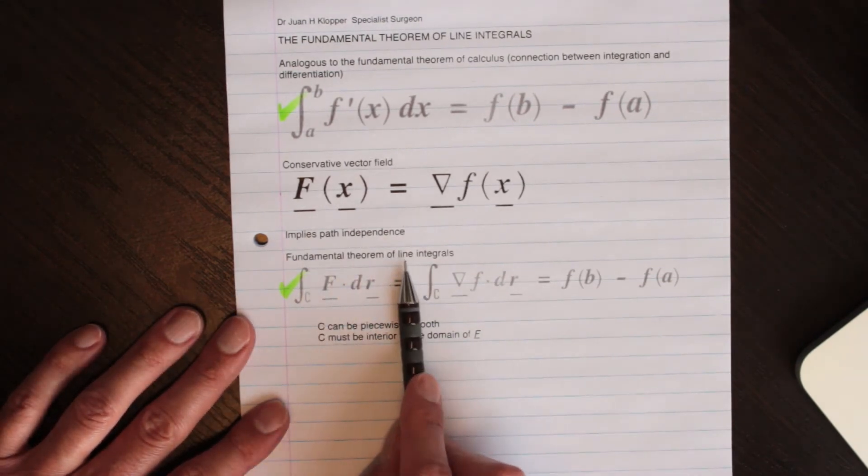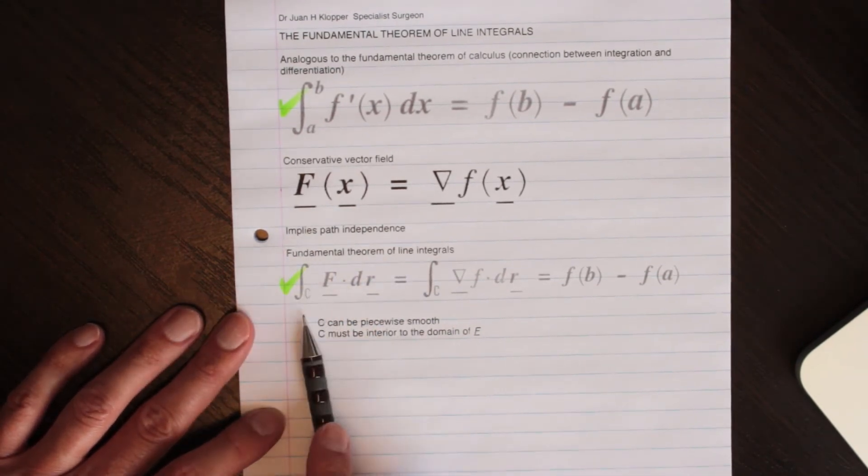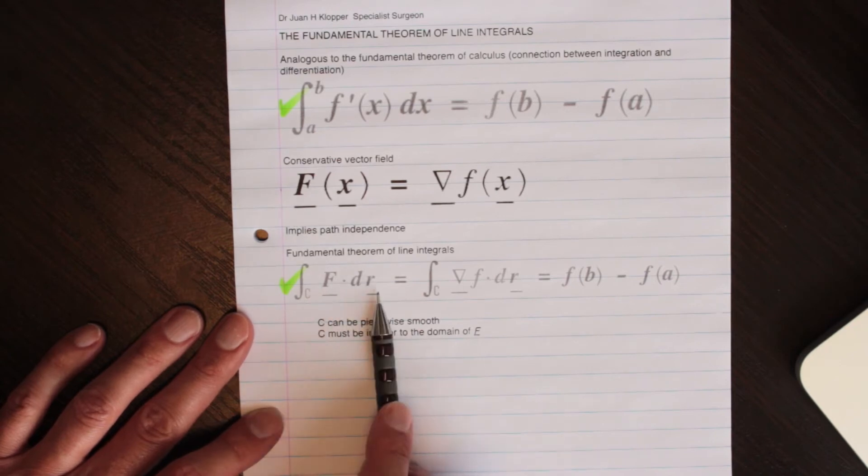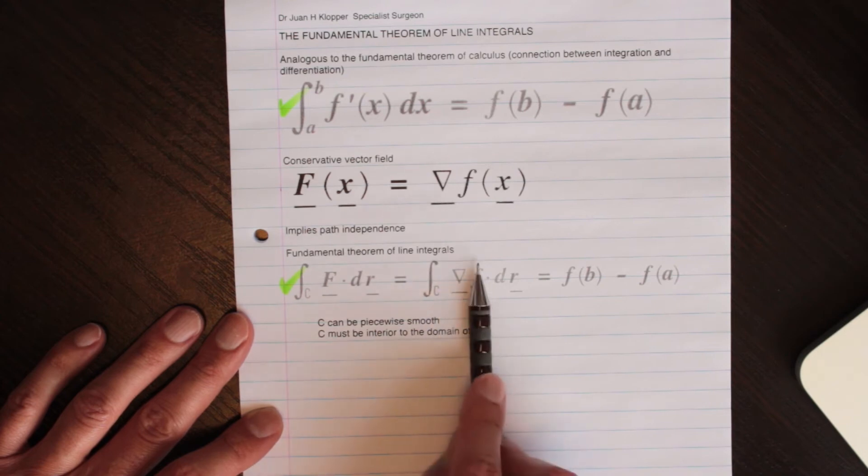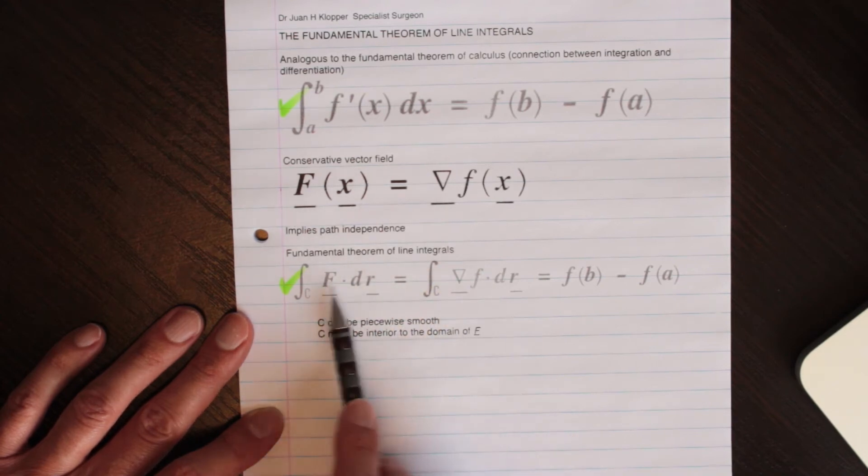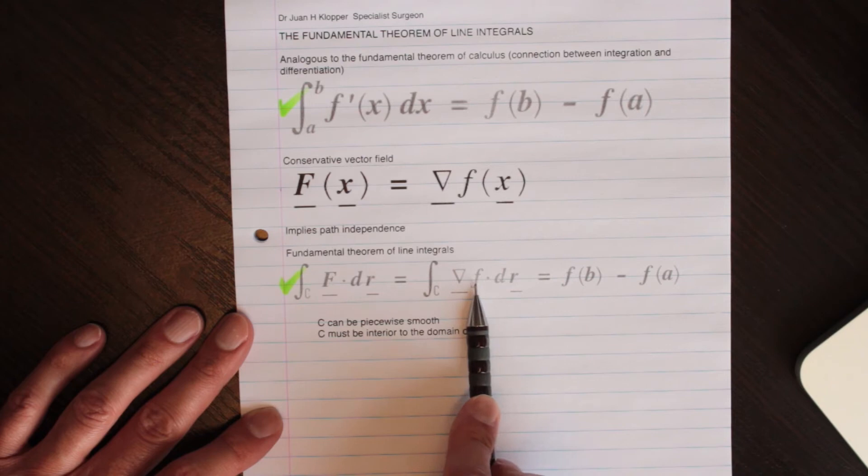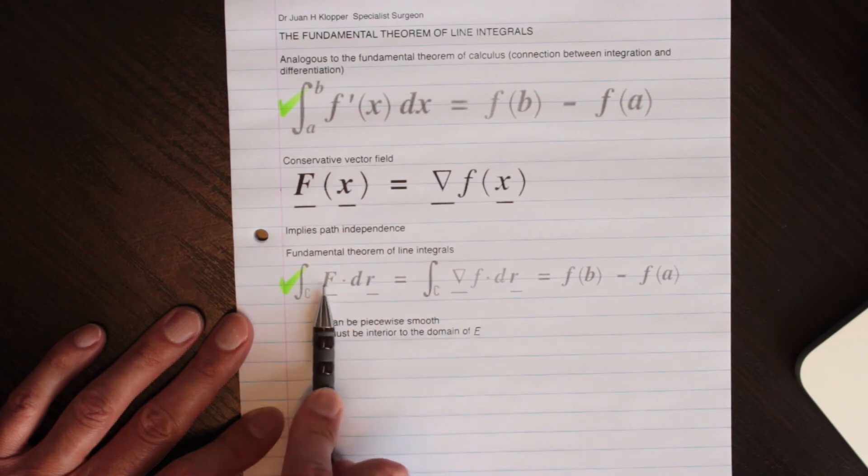So the fundamental theorem of line integral states that this line integral of f dot dr, f and r being vectors, equals this line integral of this gradient. Again, these two are the same, the gradient of lowercase f equals this vector capital F.